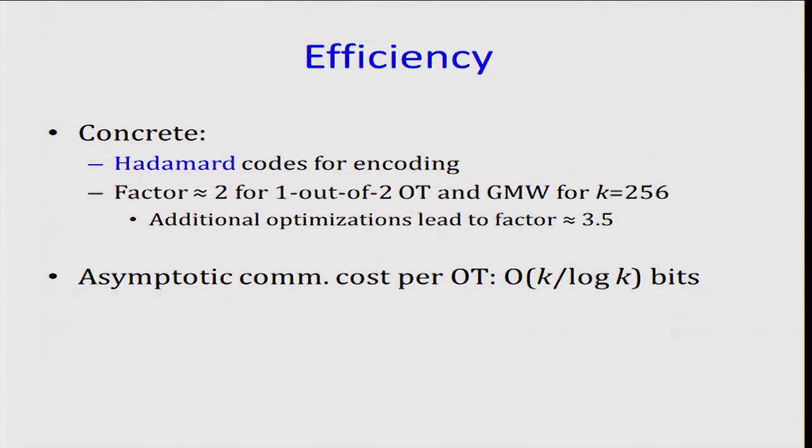In concrete terms, if we use the Hadamard codes for encoding, this will have a minimum distance K over two. And therefore, for this case, we can show that we can get a factor of two improvement for one out of two OT and also for the resulting MPC protocols like GMW, even for the multiparty case for K equals 256. There are additional optimizations, especially in the length extension case, which are algorithmic but not asymptotic. But these can lead to a factor, combined with our Hadamard codes, of 3.5 improvement over the unoptimized IKNP protocol.